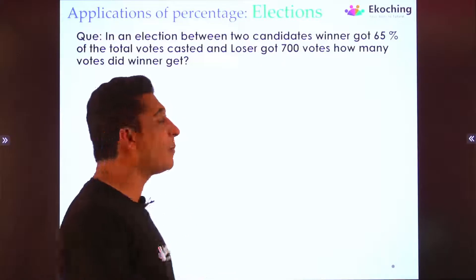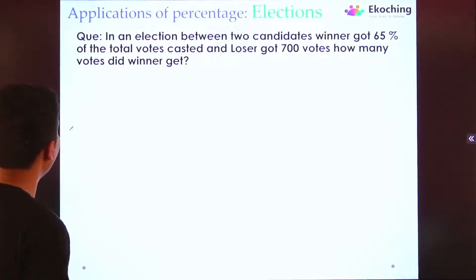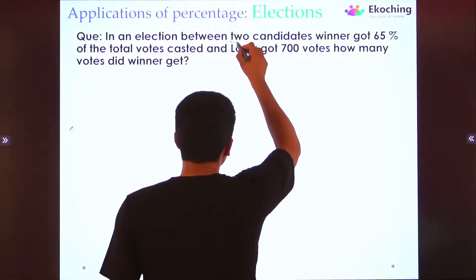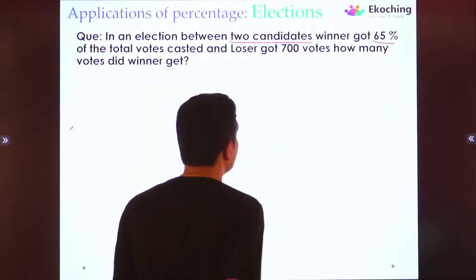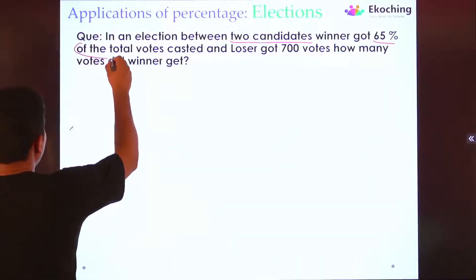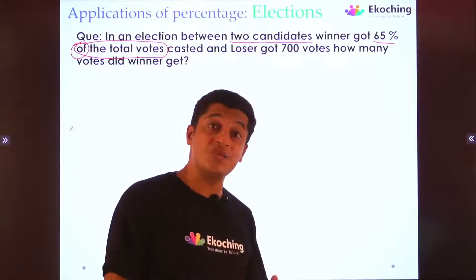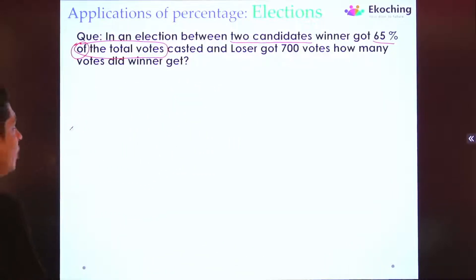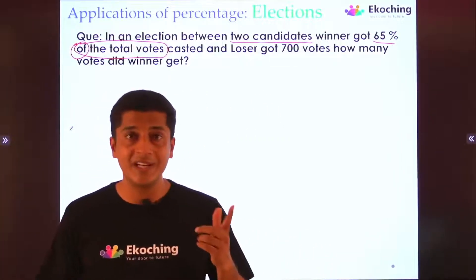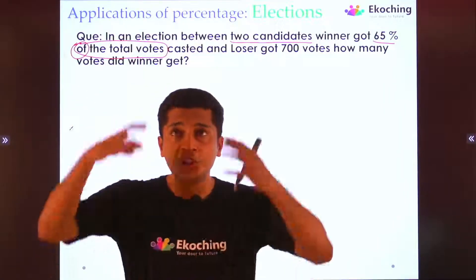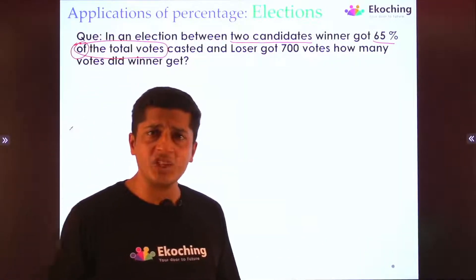In an election between two candidates, the winner got 65% of the votes and the loser got the rest. The loser received 700 votes. How many votes did the winner get? For these questions, there are normally three approaches. What I'm showing is a bifurcation approach — you create branches to understand the full breakdown of votes. This is the simplest bifurcation we can have.